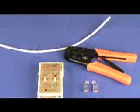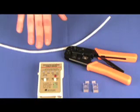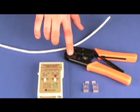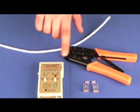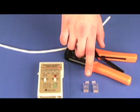In this instructional video I will show you how to make a CAT6 network cable. What you will need is your CAT6 pull cable, your pliers, crimping tool, network tester, and your RJ45 CAT6 connectors.